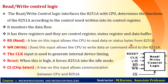The read/write control logic block consists of reset, clock, C/D-bar, read, write, and chip select signals. This block controls all activities of 8251 by the microprocessor, interfaces the 8251 with the CPU, and determines the function of 8251A according to the control word written in its control register.